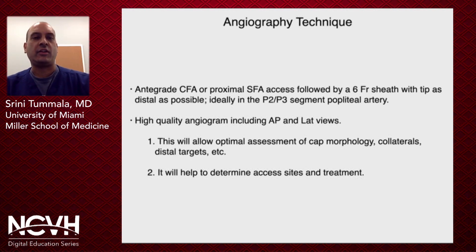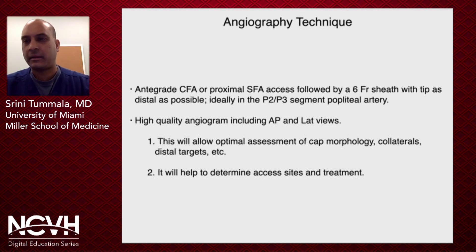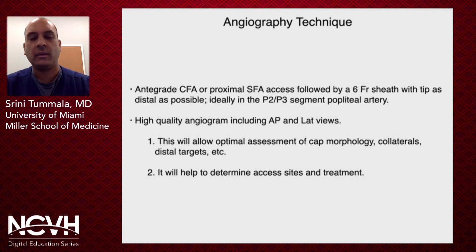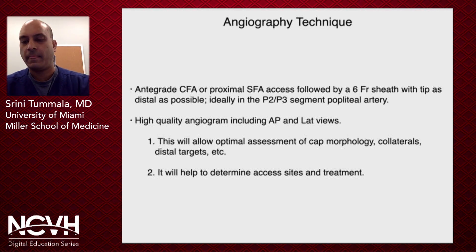In terms of angiography, this is the way I like to do it — there are obviously different ways. I typically like to get anterograde access. I put a six French sheath as distal as possible, ideally in the below knee or a segment of the popliteal artery, or maybe even at the knee joint, and really perform a high quality angiogram including AP and lateral views. This allows you to optimize filling of collaterals and native blood vessels, optimally assess lesion morphology, collaterals, and distal targets, and it really helps to determine your access sites and treatment.